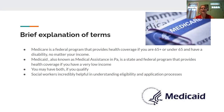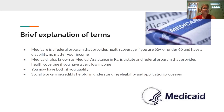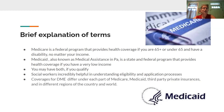Medicare is that federal program that provides health care for the population over 65 or under 65 with a disability, and does not include information about your income. Medicaid — also known as medical assistance in Pennsylvania — is a state and federal program that provides health coverage if you have a very low income. You may have both programs if you qualify under their separate eligibility criteria. Because this can get complicated, it's really helpful to have a social worker on your team.